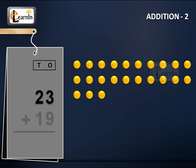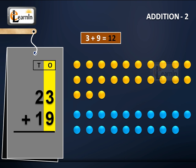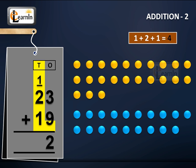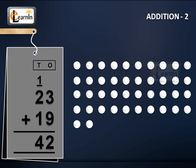23 plus 19. Adding the digits in the ones place, we have 3 plus 9 equals 12. Now carrying the 1 over to the tens place, we have 1 plus 2 plus 1 equals 4. Therefore, 23 plus 19 equals 42.